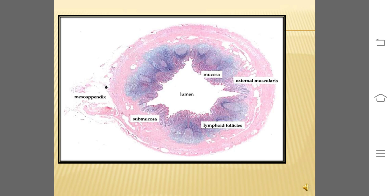As we see, the innermost lining of the appendix is mucosa — this lumen is covered by mucosa. This is a transverse section of the appendix showing mucosa as the innermost lining, which has a patchy distribution of crypts, and the submucosa has abundant lymphoid tissue in it.